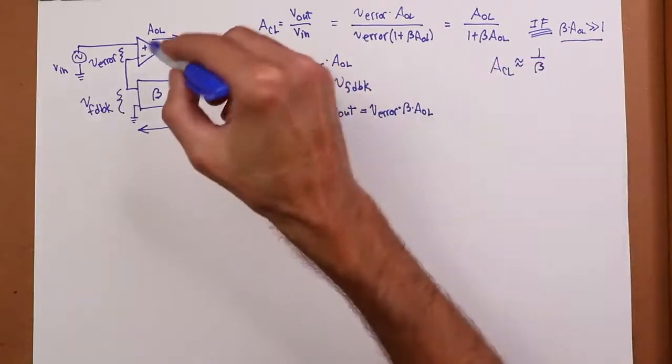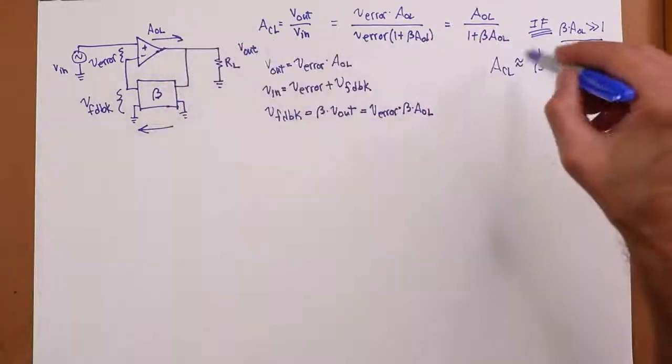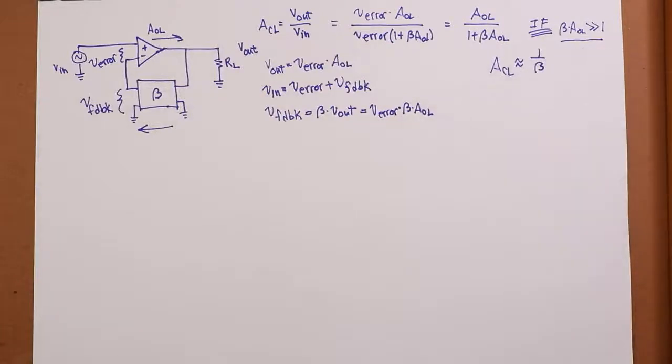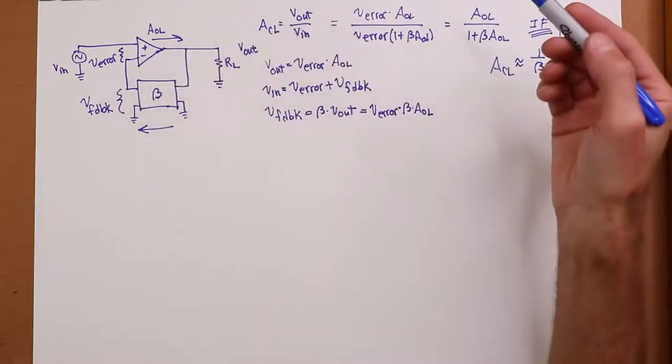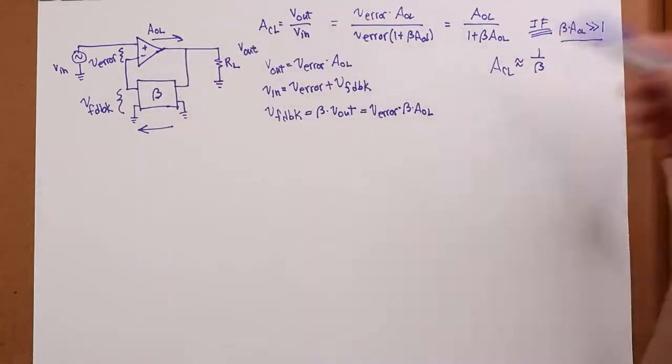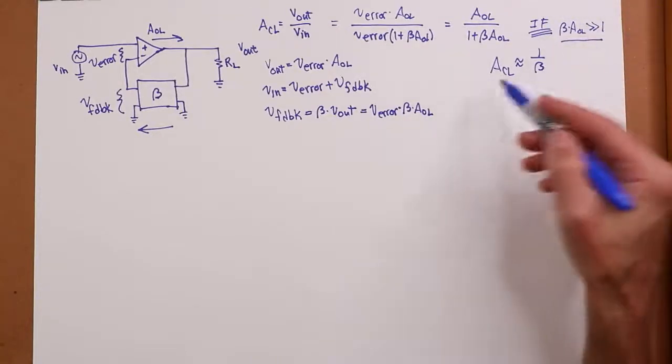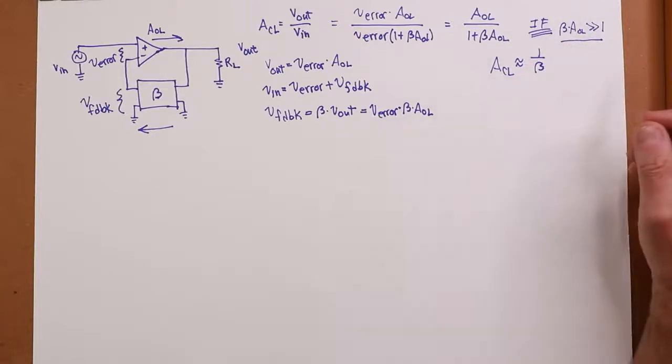As long as I have enough AOL, it's the feedback network that controls everything. Well, that's really good. If I have one op-amp with a gain of 100,000, and another one with a gain of 300,000, as long as the guy with 100,000 gives me this characteristic, they're both going to end up with the same closed loop gain. There's another part of that stability thing that we were talking about. So, okay, that's great. That's just wonderful.